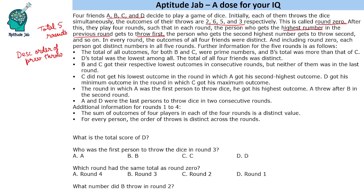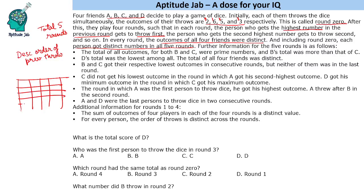So in the first round, B will throw first, C will throw second, D will throw third, and A will throw fourth. Now it is given that in every round the outcomes of all 4 friends were distinct, and including round 0, each person got all distinct numbers across all 5 rounds. Some more conditions are also given to us.